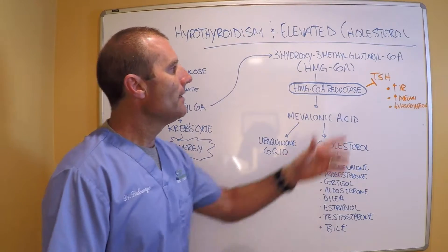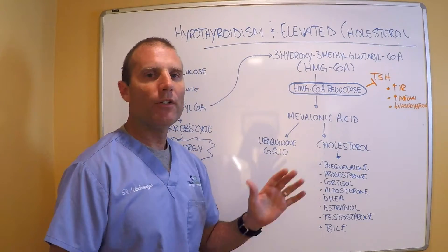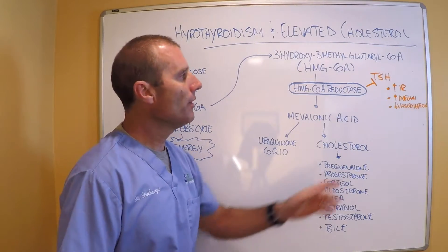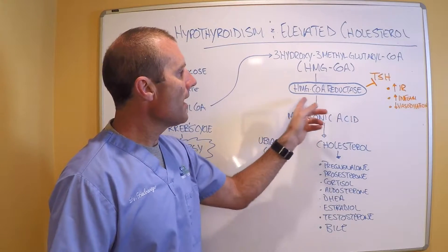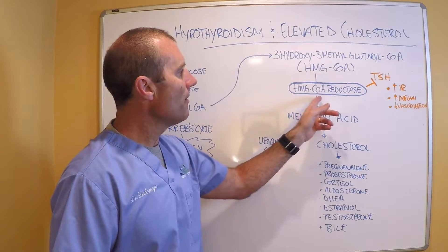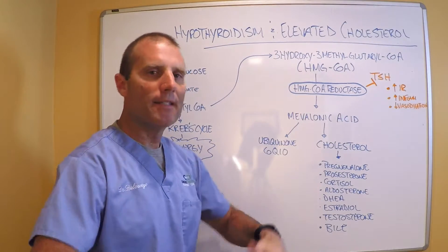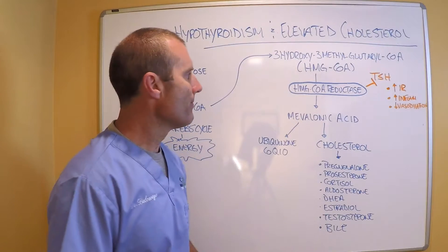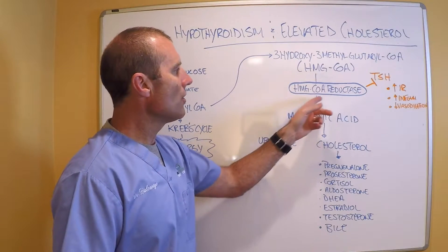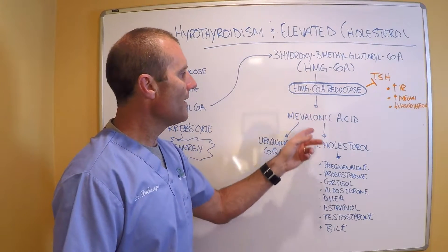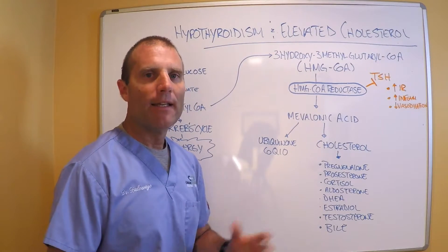And when TSH levels stay elevated, TSH, along with stimulating T4 and T3, actually increases the enzyme HMG-CoA reductase — it speeds it up or increases it. And when we increase HMG-CoA reductase, it actually increases something called mevalonic acid.